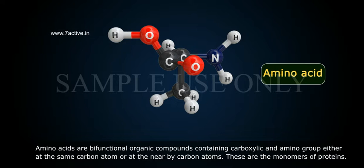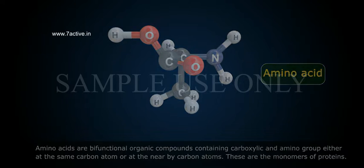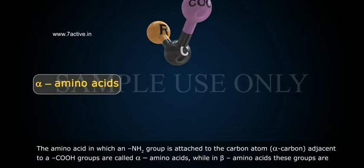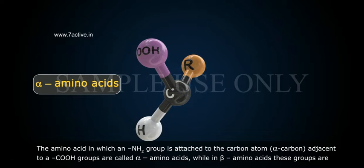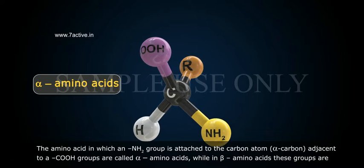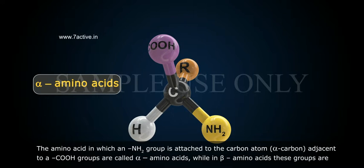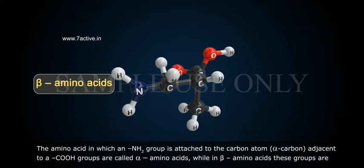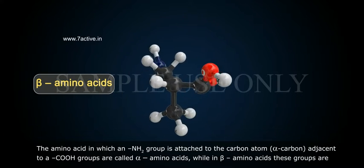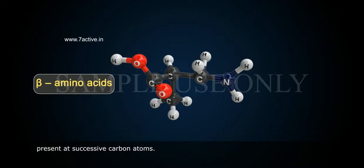These are the monomers of proteins. Amino acids in which an NH2 group is attached to the alpha carbon — the carbon adjacent to a COOH group — are called alpha amino acids. In beta amino acids, these groups are present at successive carbon atoms.